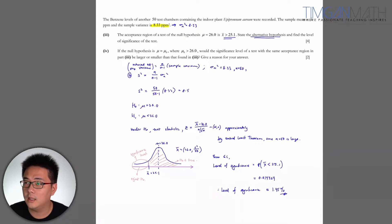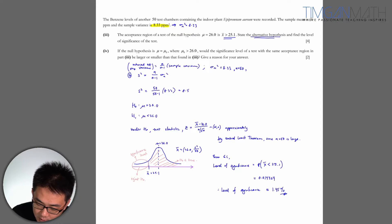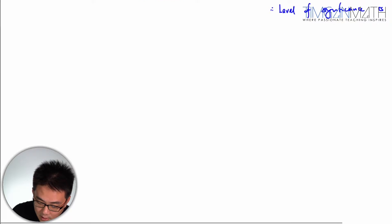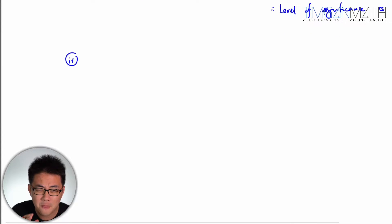So for the last part, I think the last part is pretty okay once you understand the third part. If you draw the normal curve out properly, it should be fine. You're told that the null hypothesis changed to more than 26, right? And you're told that the acceptance region is all the same. Then the question now is whether the level of significance would be more or less.